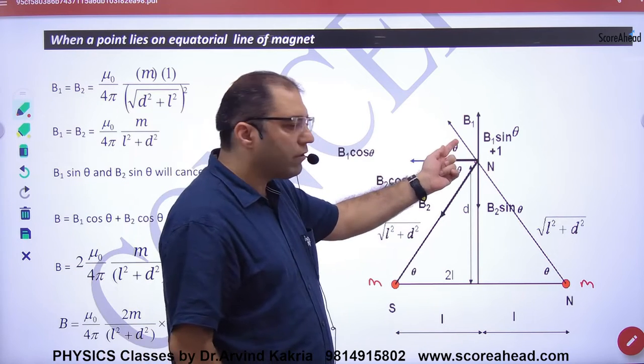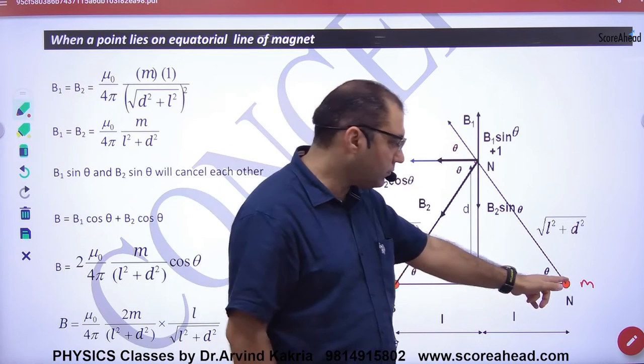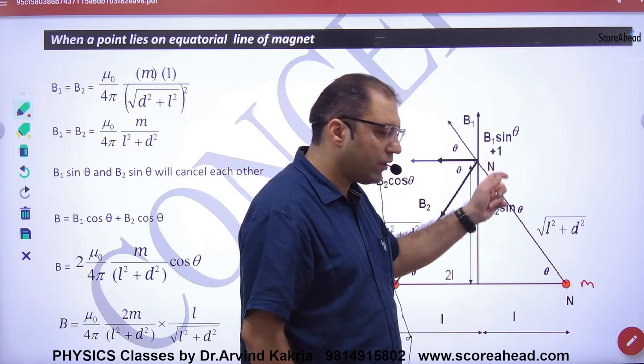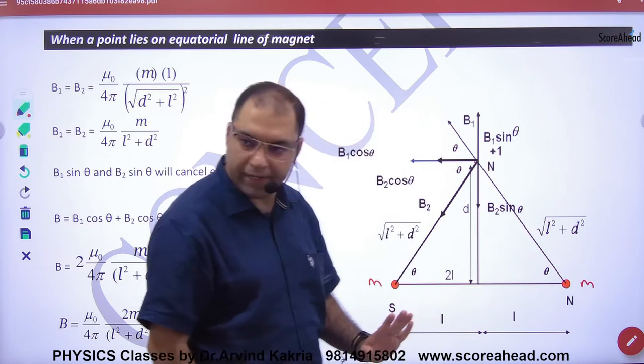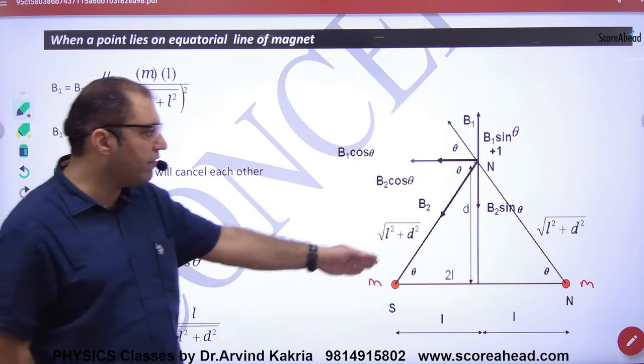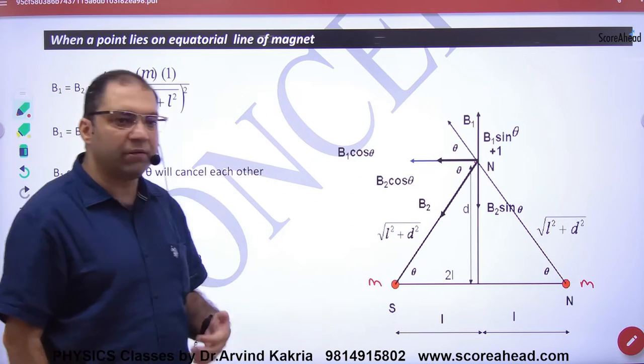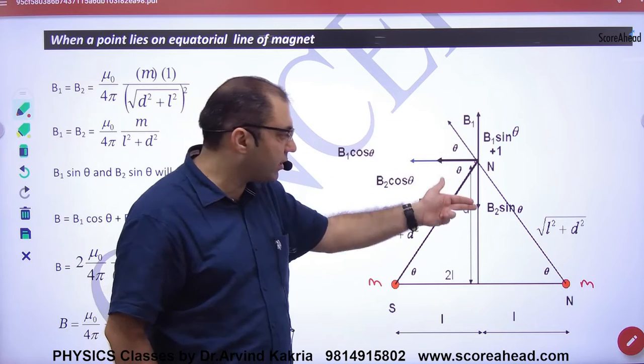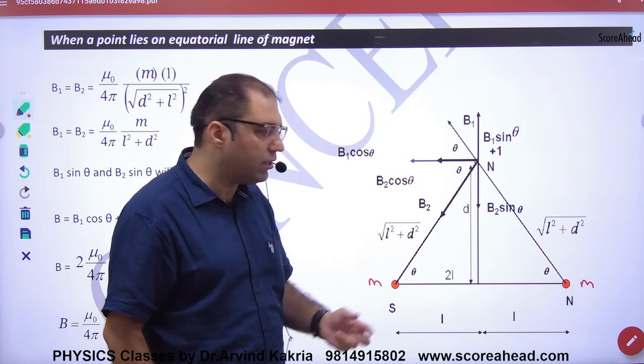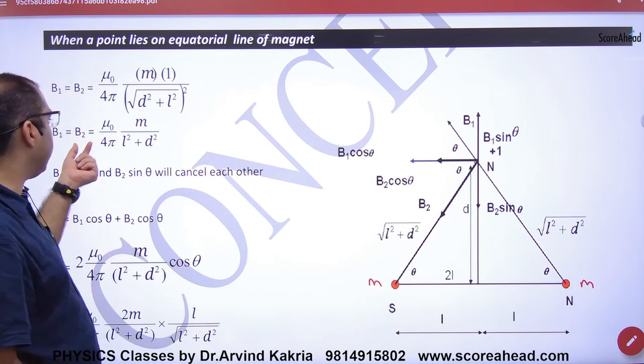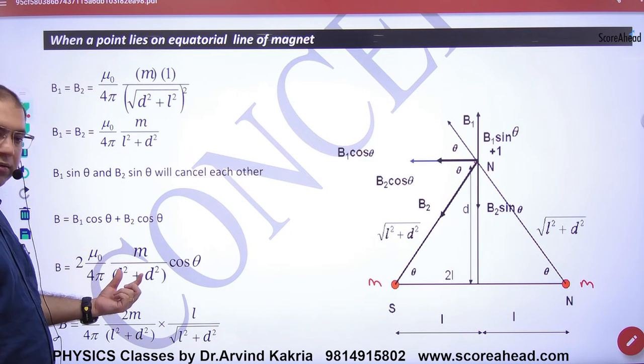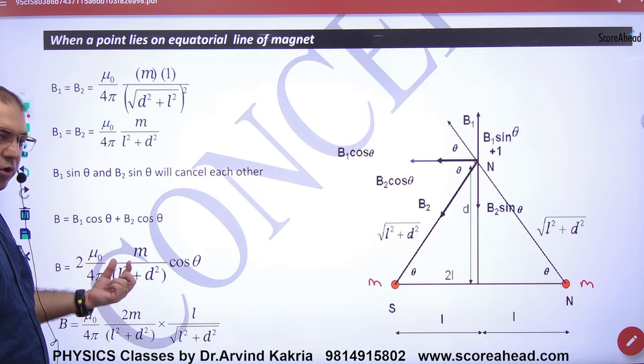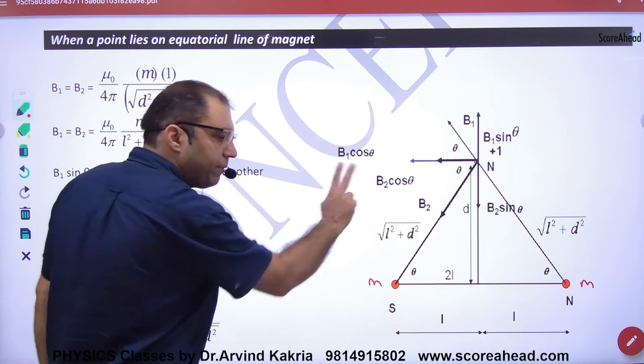What will be the value of B1? Mu0 by 4pi, m into 1 upon under root of L-square plus d-square whole square. B1 and B2 are equal, so the sine components cancel. Net B will become twice: 2 times mu0 by 4pi, m by under root of L-square plus d-square whole square, into cos theta.